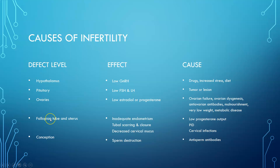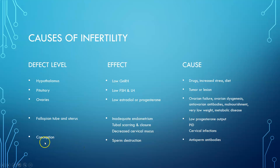At the fallopian tubes and uterus level, causes include an inadequate endometrium (possibly from low progesterone output), tubal scarring and occlusion (caused by recurrent pelvic inflammatory disease from STIs), and decreased cervical mucus (possibly from cervical infections related to STIs). At the conception level, the issue may be anti-sperm antibodies present in the female reproductive tract destroying sperm despite otherwise normal ovulation.